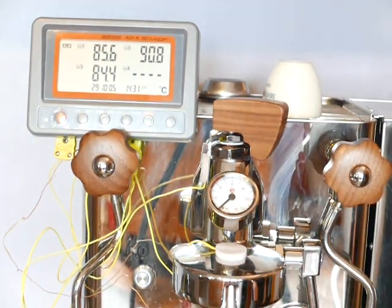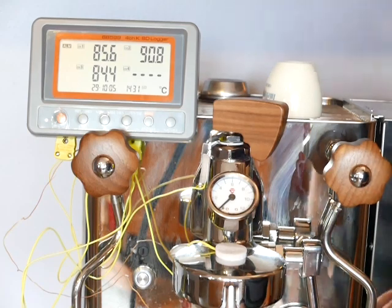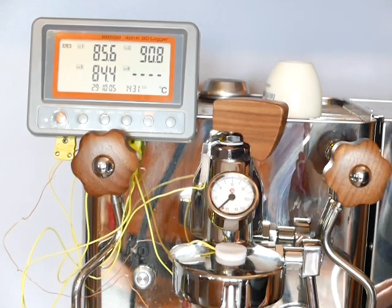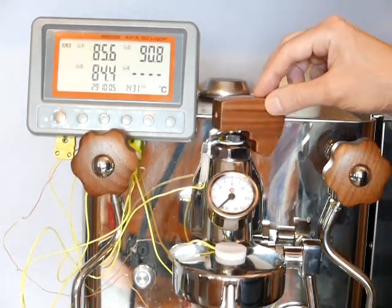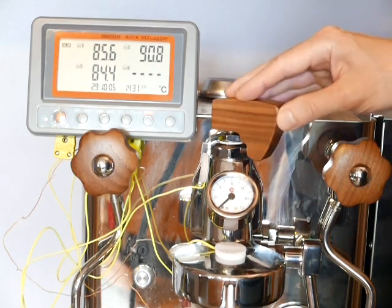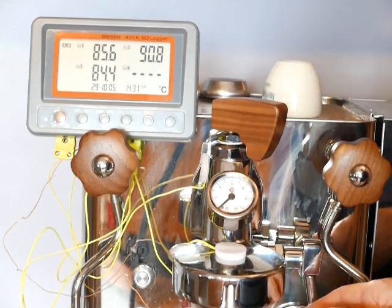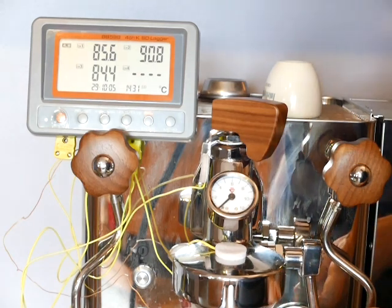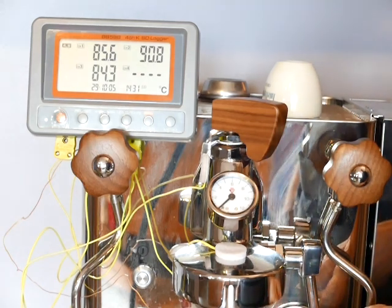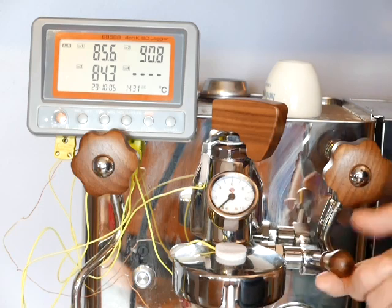What we're going to be doing is looking at the shot temperature at different flow rates. So we'll start off. The paddle setting here gives roughly a 20 second, 2 ounces in 20 seconds type affair. And we start.